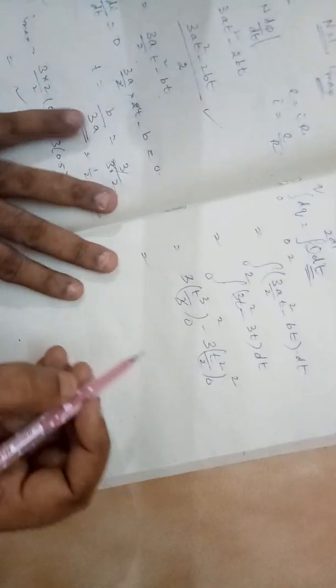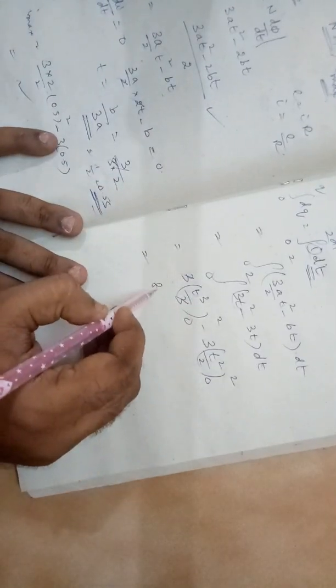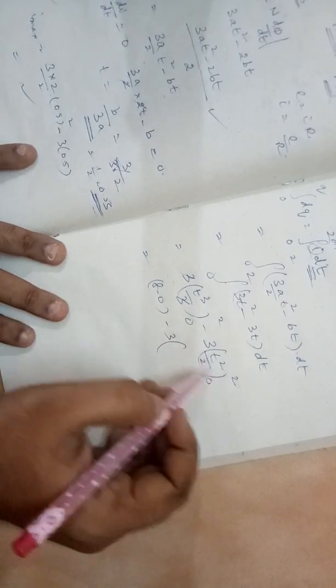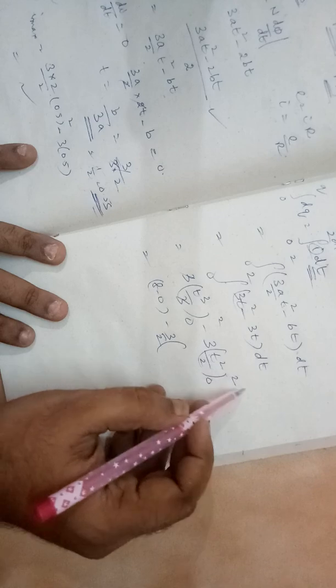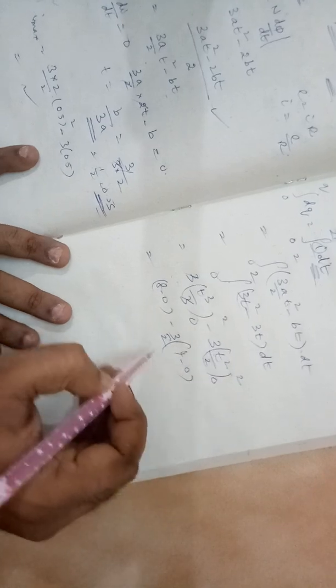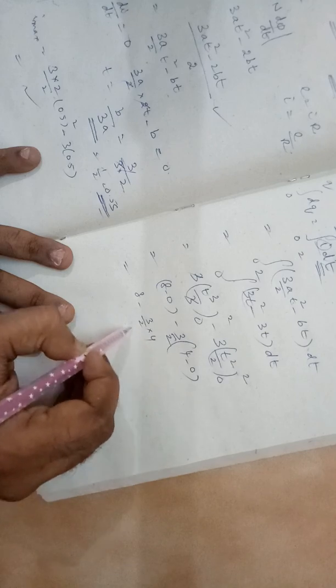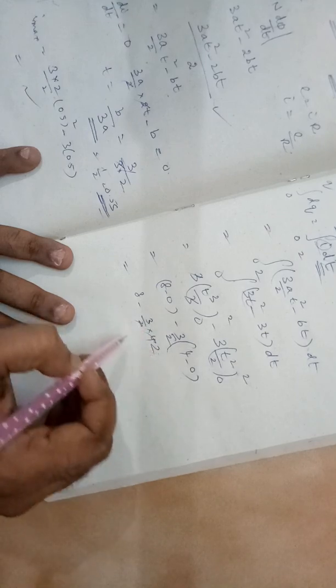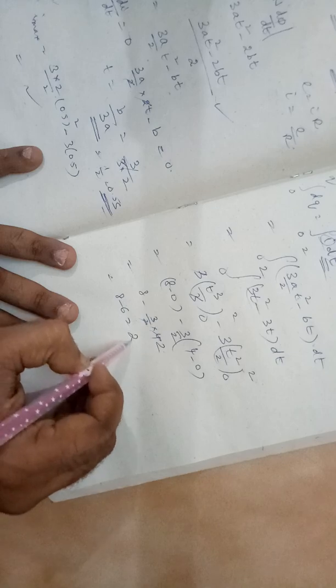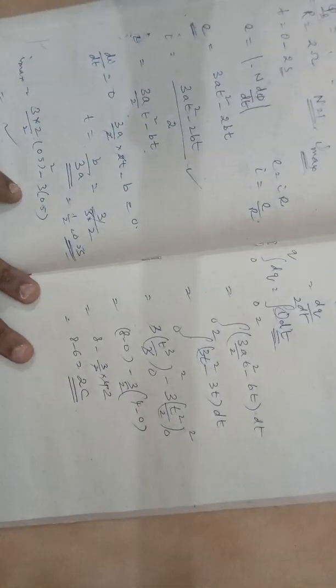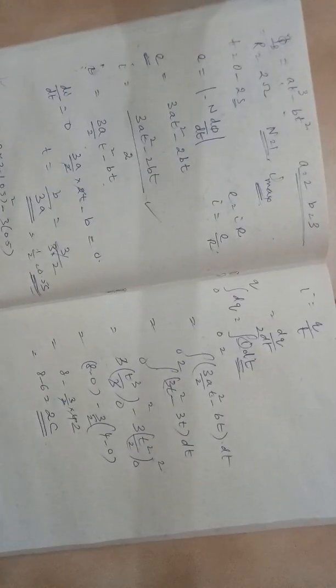3 and 3 coincides here. Here, 2 cube is 8 minus 0 minus 3 into, I am opening the brackets. This is 3 by 2 outside, 2 square, 4 minus 0. This is 8 minus 3 by 2 into 4. So it is 3 into 2, 6. 8 minus 6, it is equal to 2 coulombs.